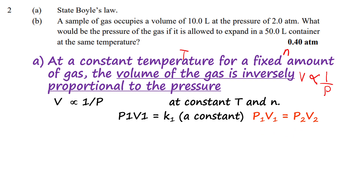It is given by P₁ times V₁ equals a constant k. So if you have two pressures at two volumes, we have P₁V₁ = P₂V₂.